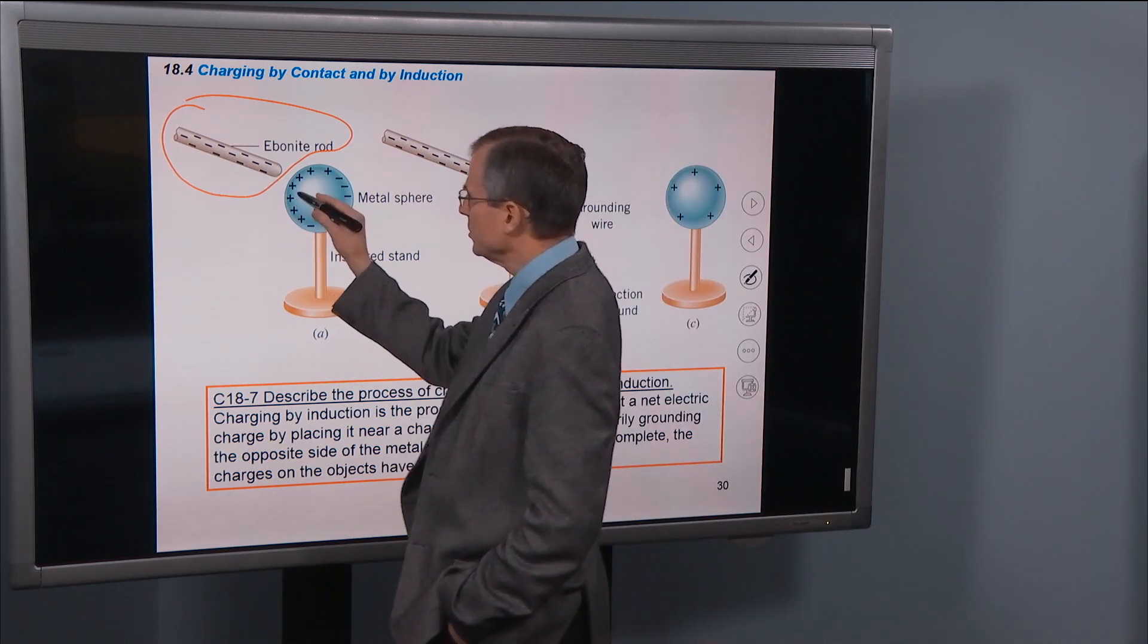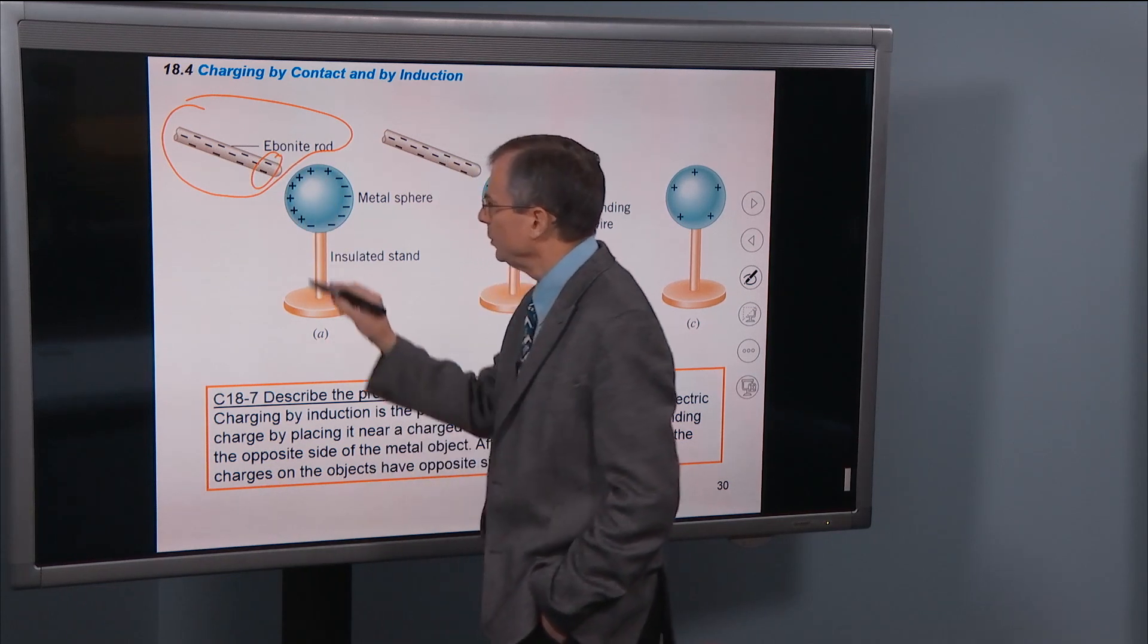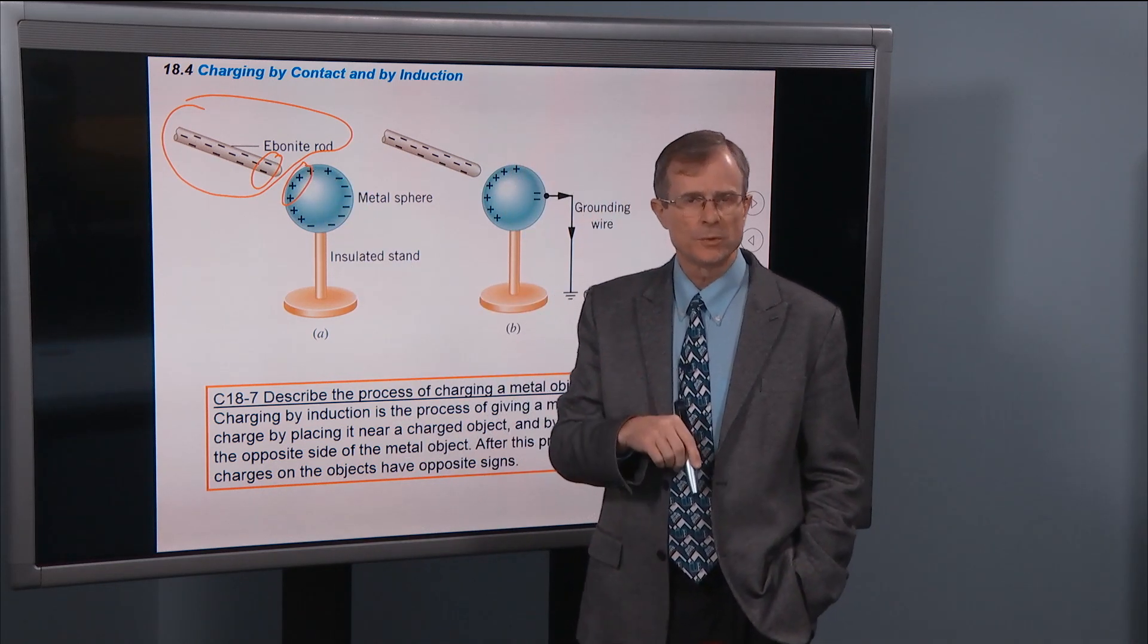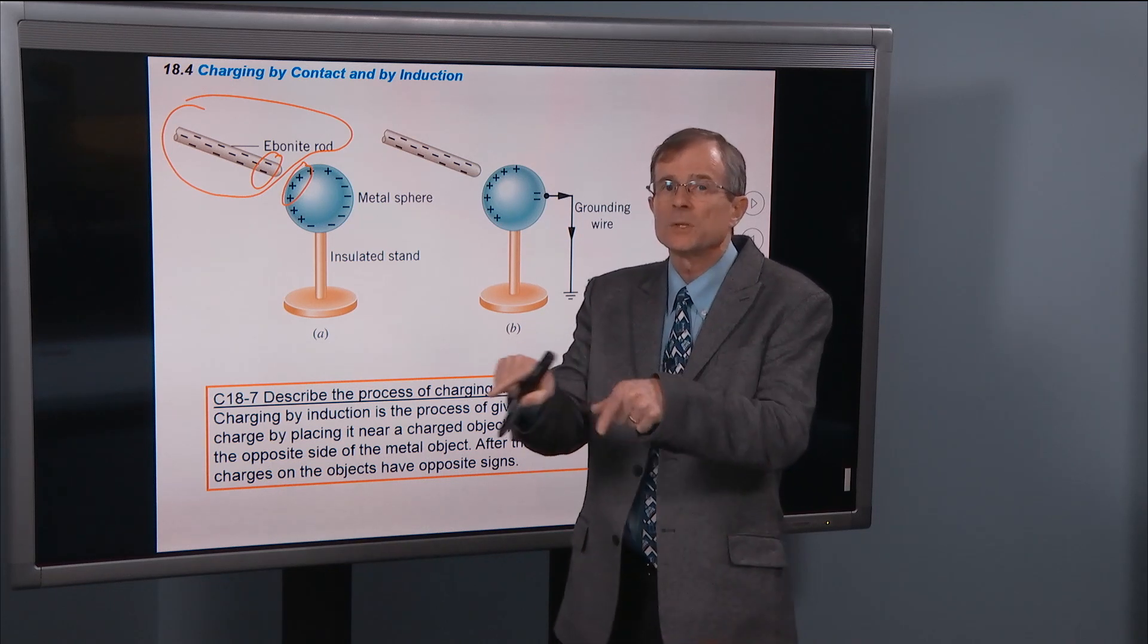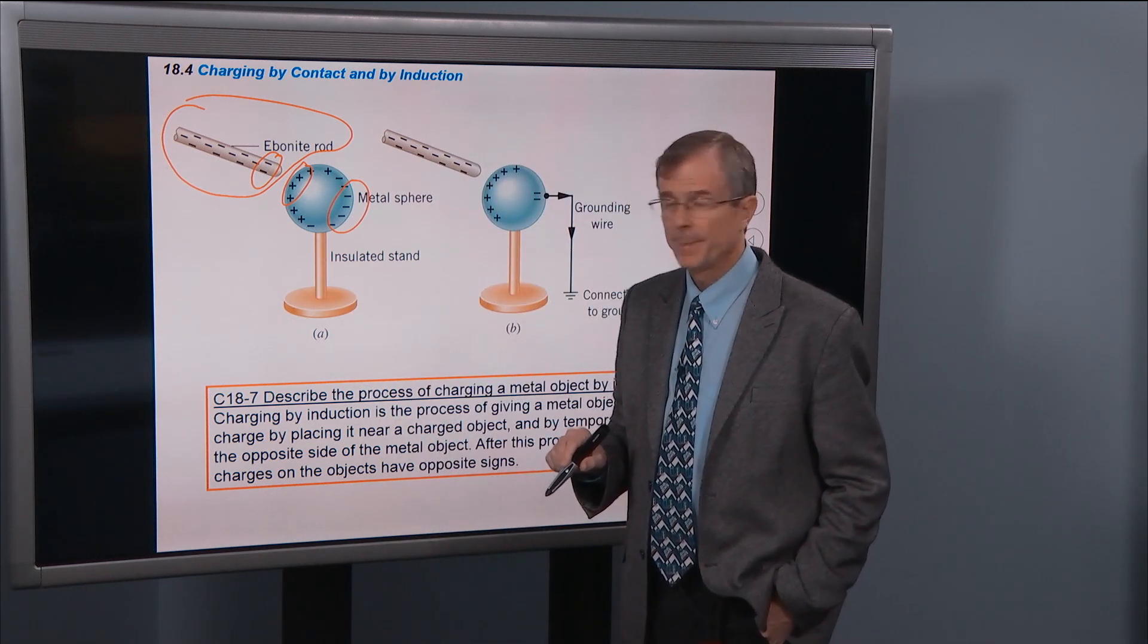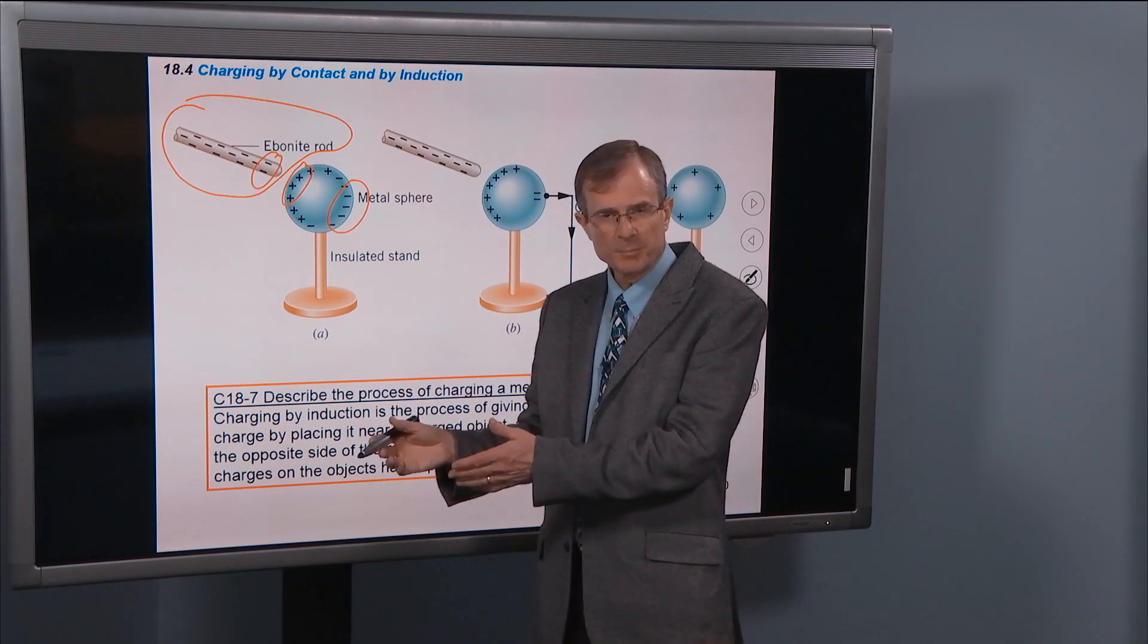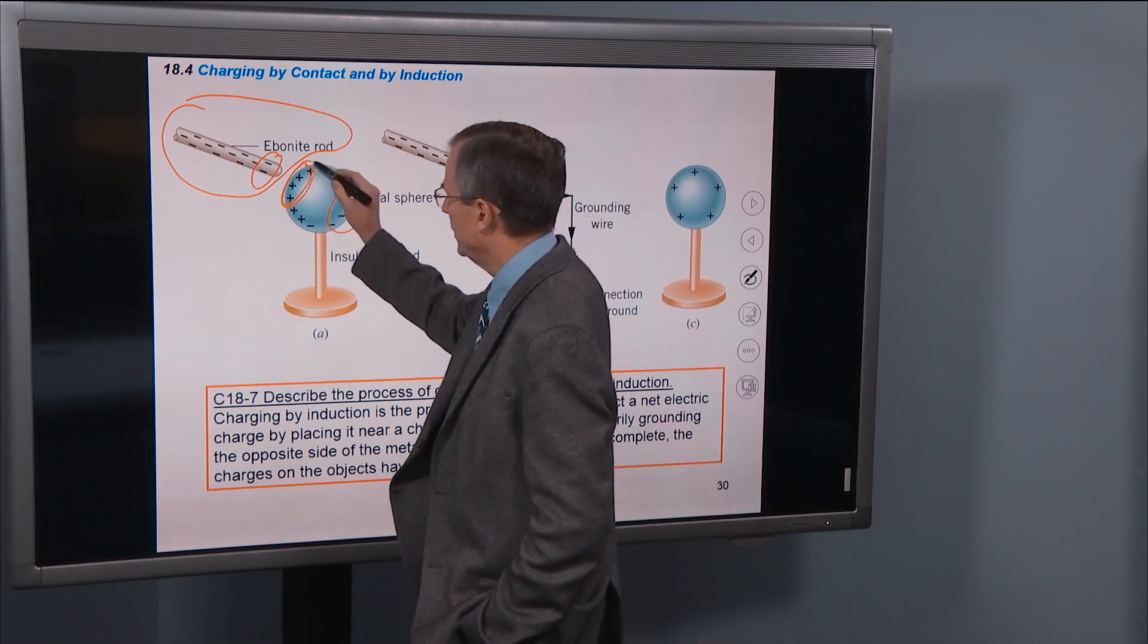Instead, we'll bring it close enough so that the electrons in the rod will push the electrons in the sphere, the portion of the sphere that's closest to the rod. The electrons will repel, the electrons in the rod will repel those electrons in the sphere and push them over onto the far side of the sphere. That will leave some atoms with nuclei that have been stripped of some of their electrons, leaving this portion of the sphere positively charged.